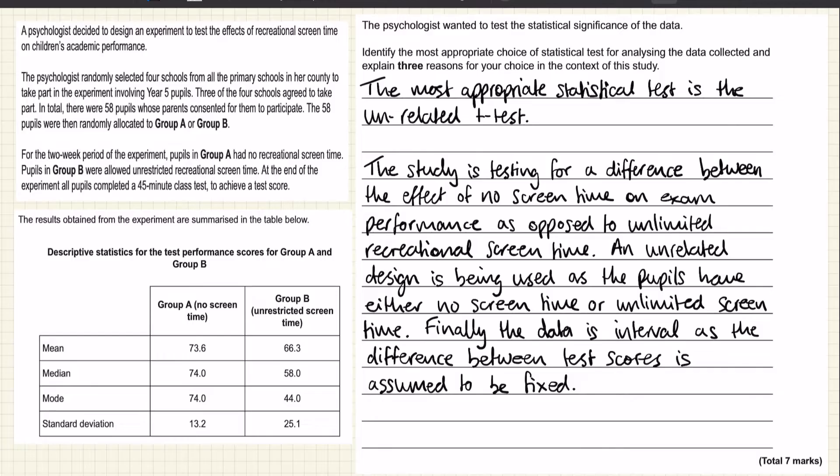Ok, now keep in mind here, you must link your reasoning to the stem. You've got 2 marks available for every justification, so it's not enough to simply say that the study is unrelated and then move on. You have to say why the study is unrelated, and you have to use the information in the study to do that.